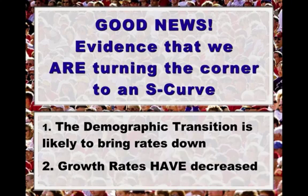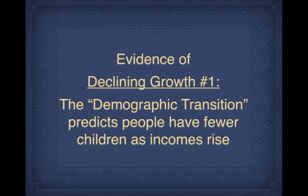Here's some evidence of good news that we are turning the corner to an S-curve. The two pieces of evidence I present are the demographic transition, which predicts that birth rates are likely to come down, and secondly, the fact that rates have in fact come down.